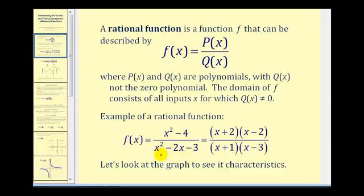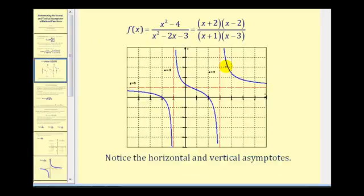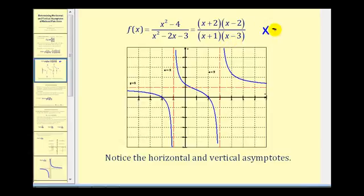It's often helpful to express a rational function in factored form. Looking at the graph of this function, we notice it has two vertical asymptotes at x equals negative one and x equals three. Vertical asymptotes are lines that the graph approaches but never touches. This graph also has a horizontal asymptote of y equals one, which is a line the graph approaches but may also cross. The domain must exclude x equals negative one and x equals three since they make the denominator zero.